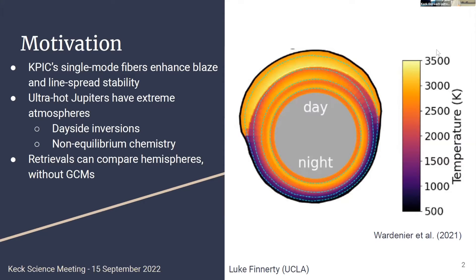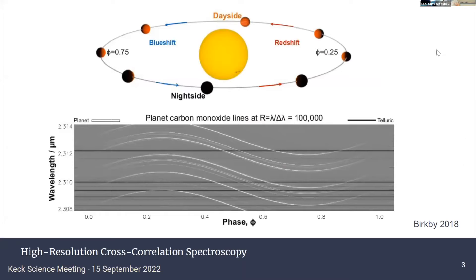What we wanted to do was approach this with a free retrieval — look at the day side, look at the night side, and make as few model assumptions as possible so that we can compare what we get to global circulation models. The technique we use is called high-resolution cross-correlation spectroscopy. The idea is that you treat the star-exoplanet system as a super-high-contrast spectroscopic binary. Because hot Jupiters have orbital periods of just a few days, if you observe for a night or half a night, the radial velocity of that exoplanet will change by tens of kilometers per second, and lines associated with the planet will trace out a sinusoidal pattern.